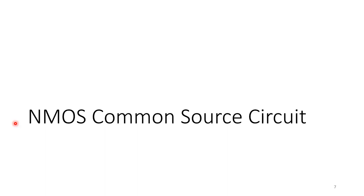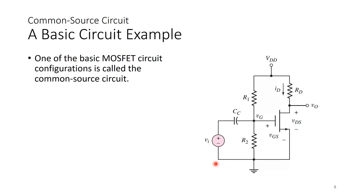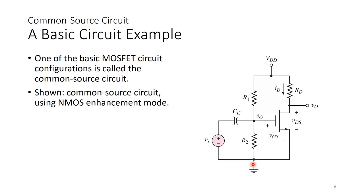Now let's look at the common source circuit. These are real circuits, but it's easier as an introduction to simplify them so you have real understanding of the fundamentals behind circuit design. One of the basic MOSFET circuit configurations is called the common source circuit. We have drain, gate, and source — and the source is connected close to ground. That's why it's called the common source circuit, just like the common emitter in BJT.